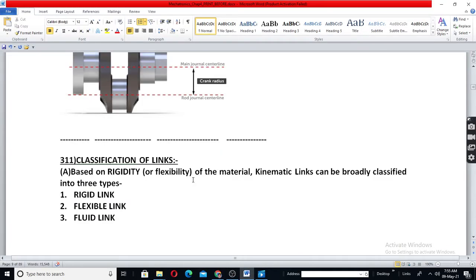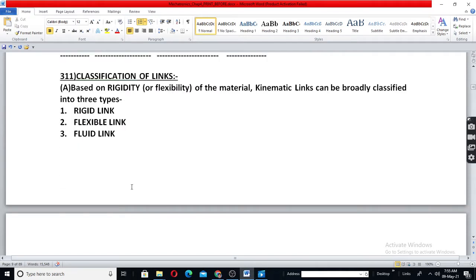Next, class 186 means 56, classification of links based on rigidity or flexibility. Rigidity means opposite of flexibility. Based on rigidity or flexibility of the material, kinematic links can be broadly classified as rigid, flexible and fluid.